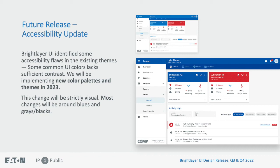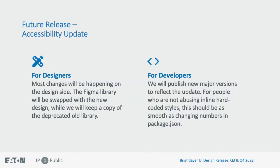This change will be strictly visual. Most changes will be around the blues, grays, and blacks. As you can see in the example on the right, the top one is the current existing theme, and the bottom one is what it will look like after the accessible theme update. You will notice the blues are getting a lot darker — in fact, matching the kind of blue hue you get at Eaton.com. The text also gets a lot darker, and even the gray text becomes more legible. Most of the challenges will be on the design side. We'll make an identical copy of the existing Figma library that everyone is familiar with and mark that file as deprecated. You can still use the deprecated old library, but be aware there will be no future updates. Meanwhile, we'll be updating the original file directly to use the new accessible theme and publish all the changes at once around the middle of 2023.